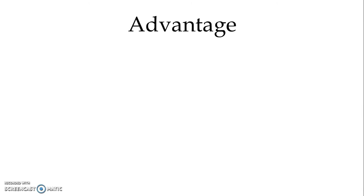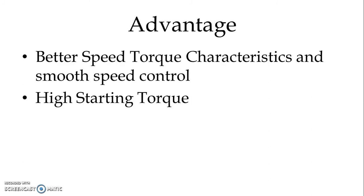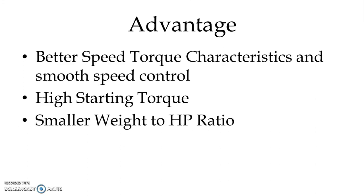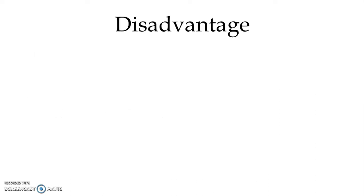We have certain advantages as well as disadvantages of the DC system compared to the AC system. Starting with the advantages: in the case of DC series motor, better speed-torque characteristics are possible and speed control is quite smooth. We can get high starting torque, smaller weight-to-HP ratio, and the system is capable of attaining a high rate of acceleration and retardation.